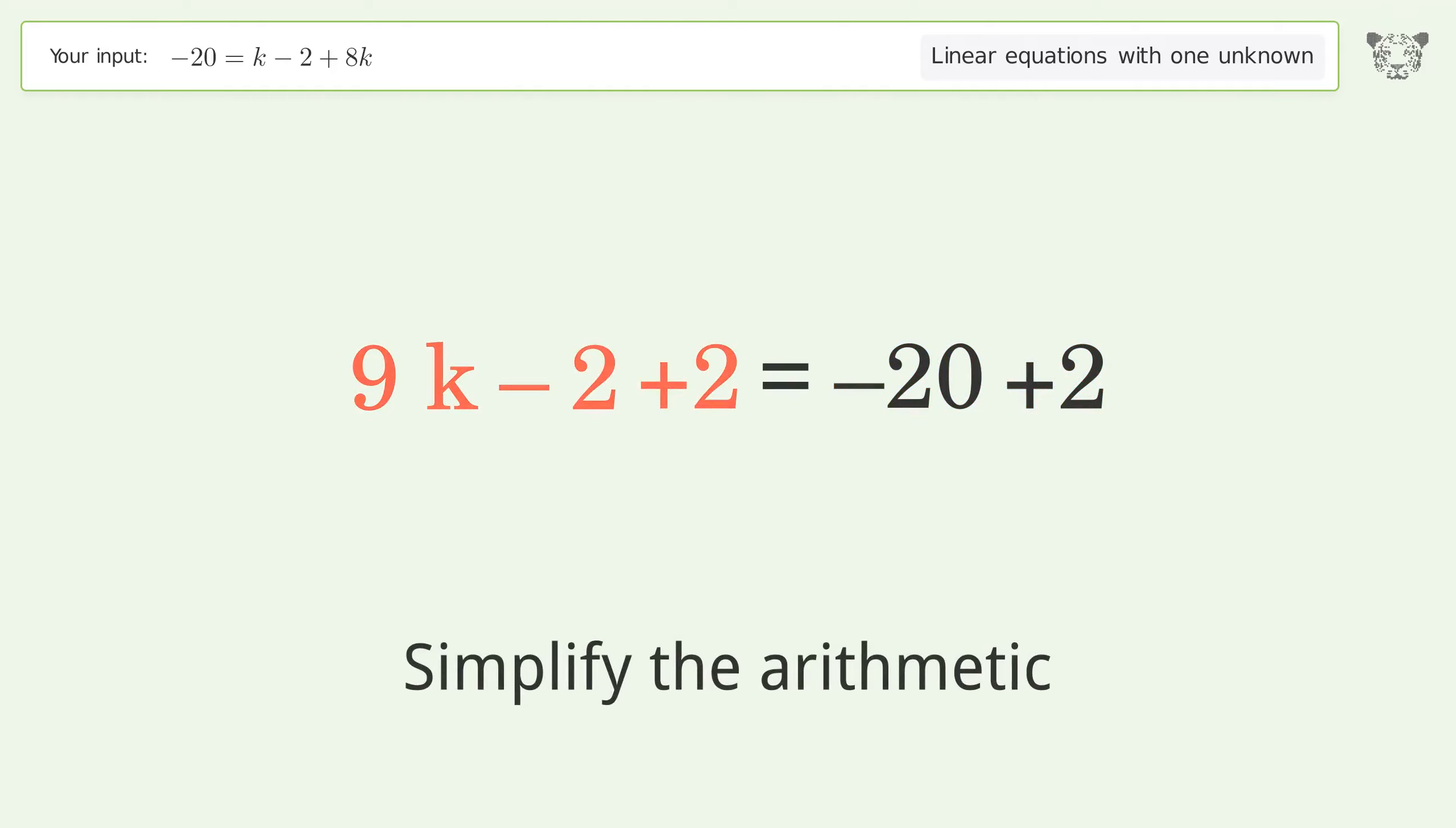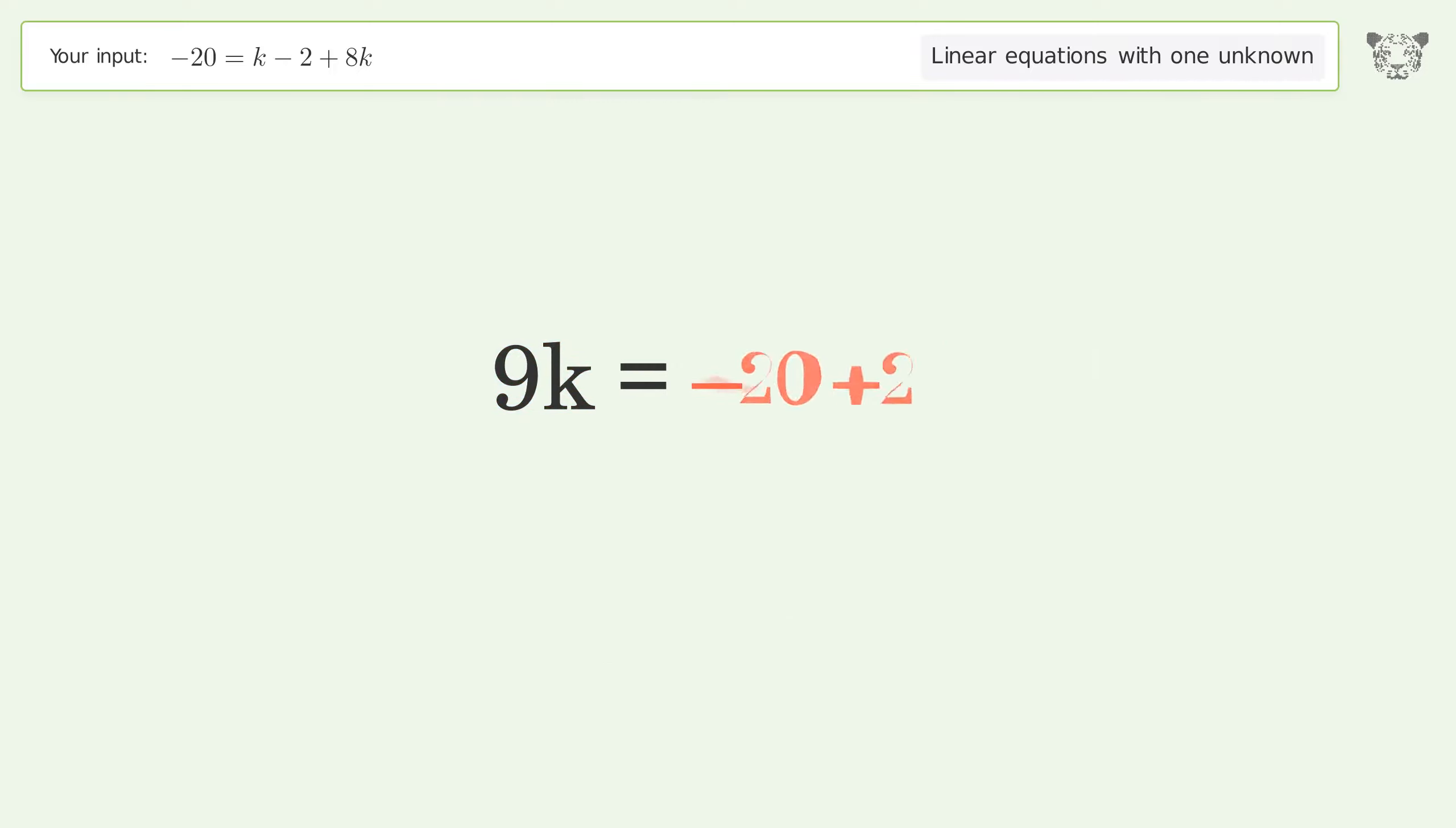Simplify the arithmetic. Isolate the k. Divide both sides by 9.